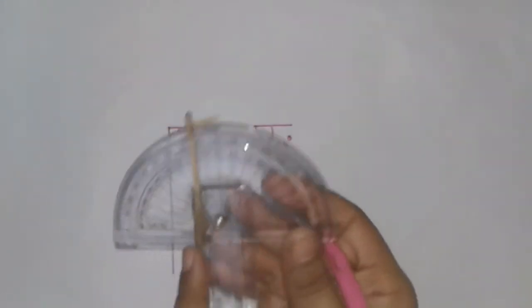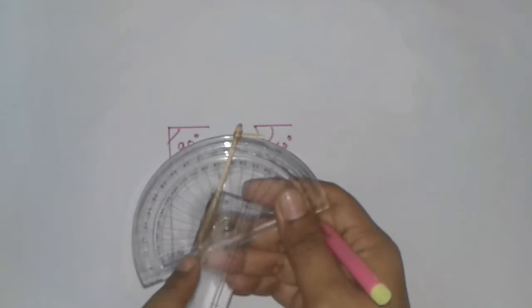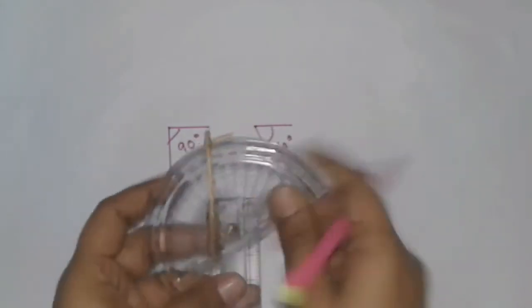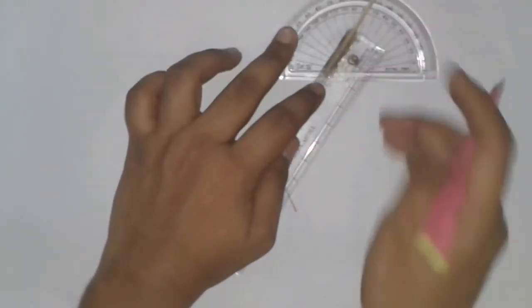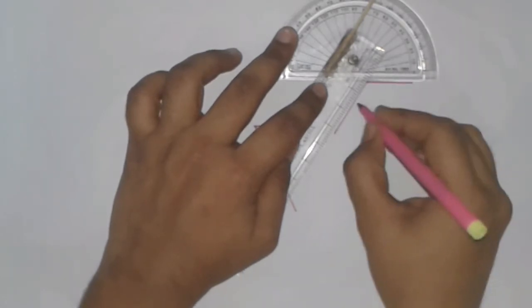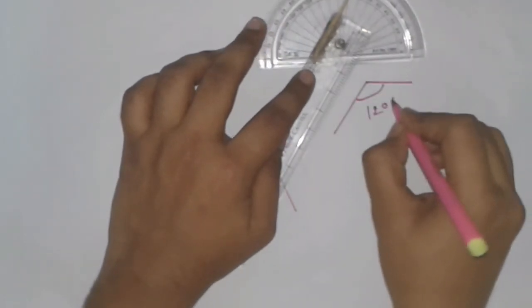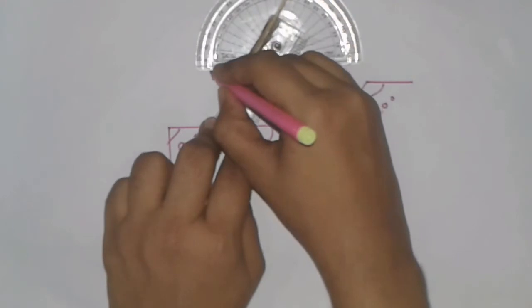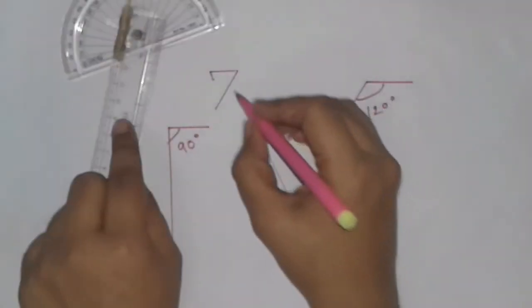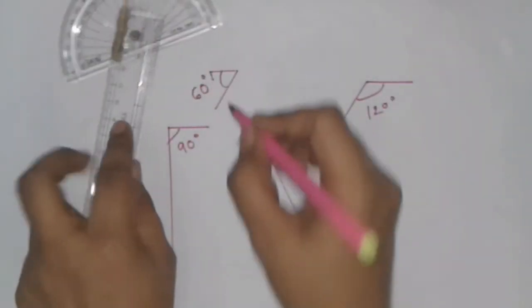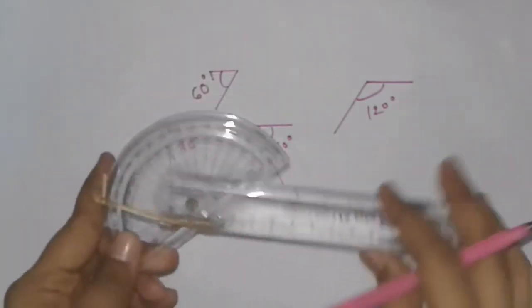Now if you want to draw a line of 120 degrees, you can do it by here. So now that line is 120 and that line is 60 also. So that is our degree protractor.